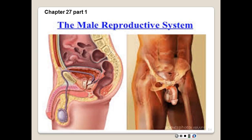All living things reproduce. Reproduction is a process by which organisms make more organisms like themselves. Reproduction is one of the things that set living things apart from non-living things. But even though the reproductive system is essential to keeping species alive, unlike other body systems, it is not essential to keeping an individual alive.